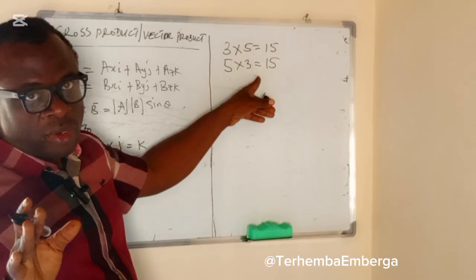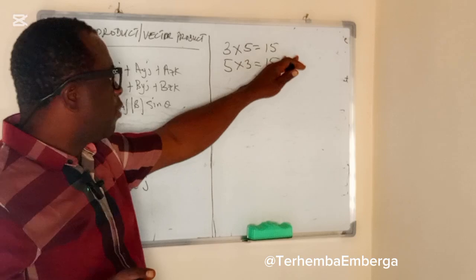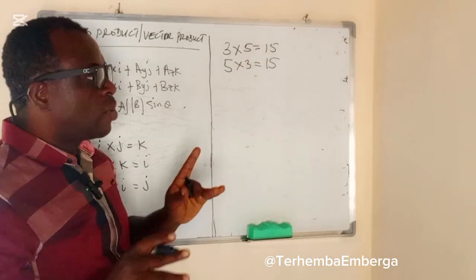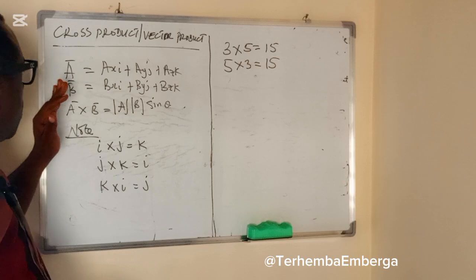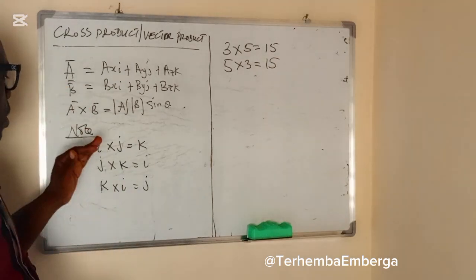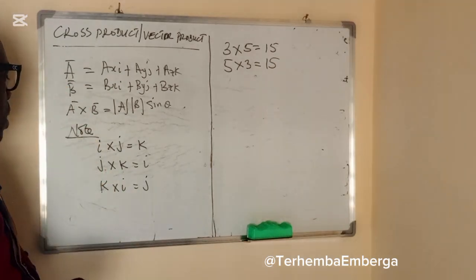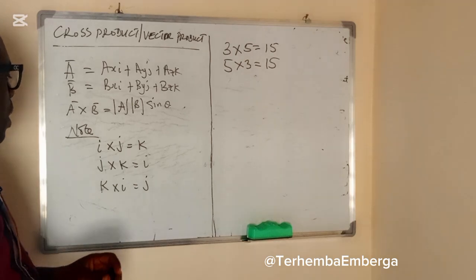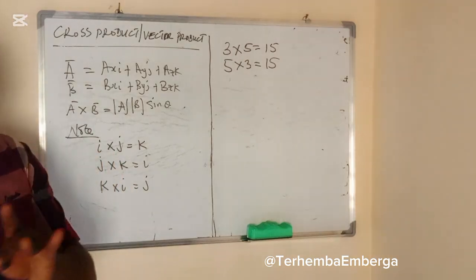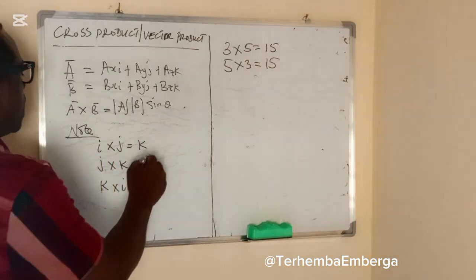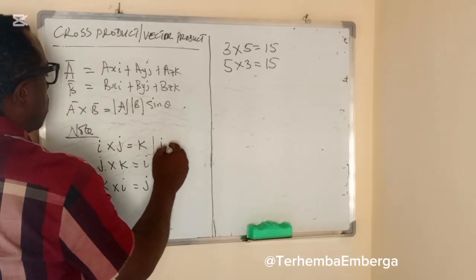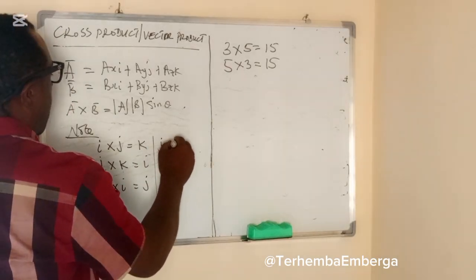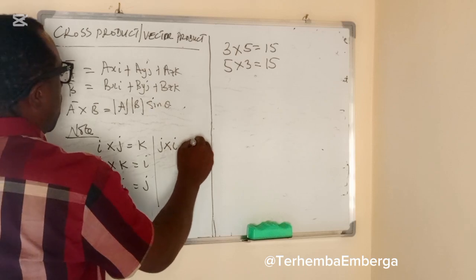That's what we call commutativity. So in cross products, multiplication of two vectors is not commutative. So in the same way, if you say that J cross I, it will give you minus K.